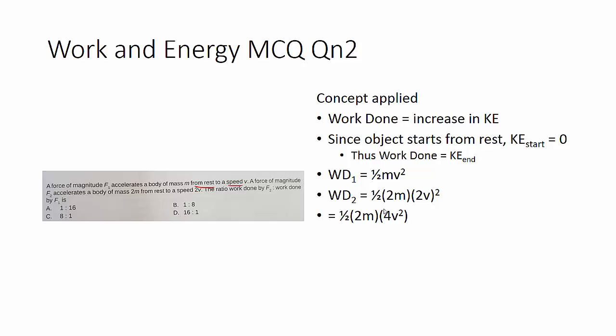If you do a bit of rearrangement or multiplication, it will be half times 2m and 4v squared. So we just square this. And in this case, what I want to do is that I'll bring out this 2 and 4 out, so that it's equivalent to 8 half mv squared.